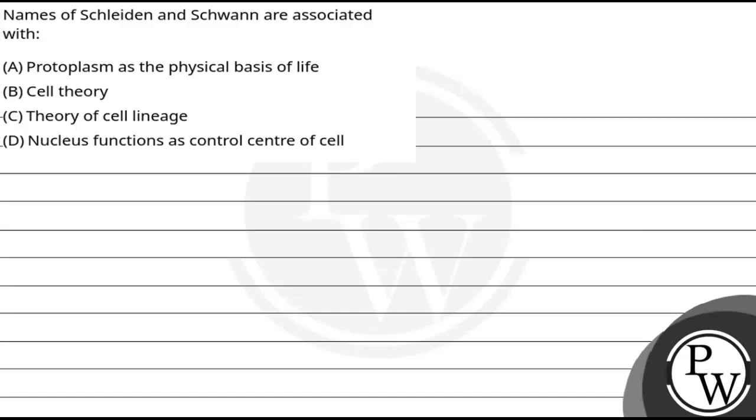Hello, let's read the question. In this question, we are told about two scientists' names, Schleiden and Schwann, and which concepts they are associated with. We have to identify this. There are options: A) protoplasm as the physical basis of life, B) cell theory, C) theory of cell lineage, and D) nucleus functions as control center of the cell.